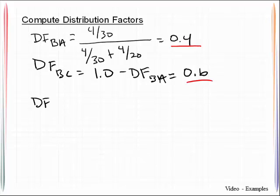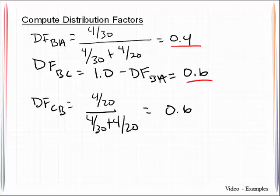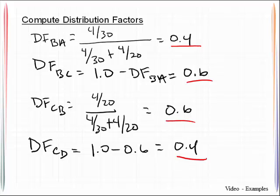In a like fashion we can get it for joint C. That will give us 0.6 and once again I can get the other distribution factor by subtracting that off. That becomes 0.4.